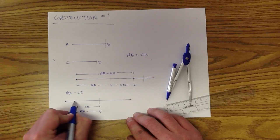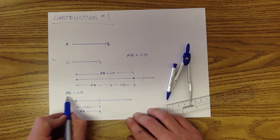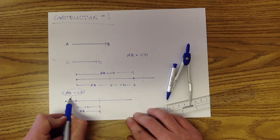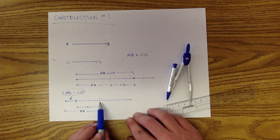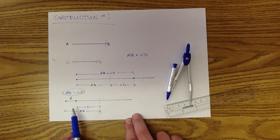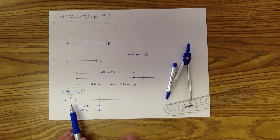This segment from here to here would be AB minus CD. We've got AB. We're taking CD away from it. So what are we left over with? This little segment right there.